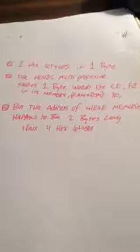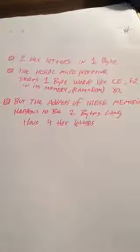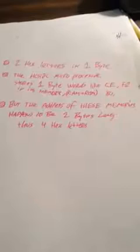Alright, regarding the HCS12 microprocessor. Two hex letters is one byte. The HCS12 microprocessor stores one byte words, like CE, F2, 80, in its memory, which is RAM and ROM.